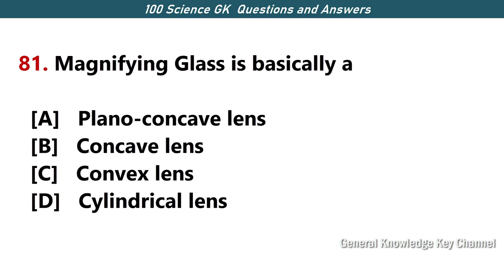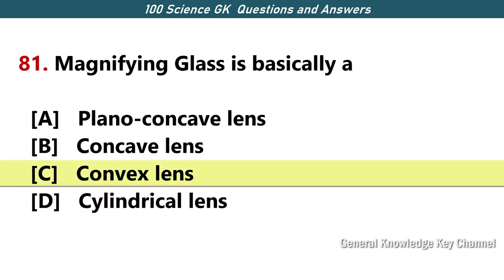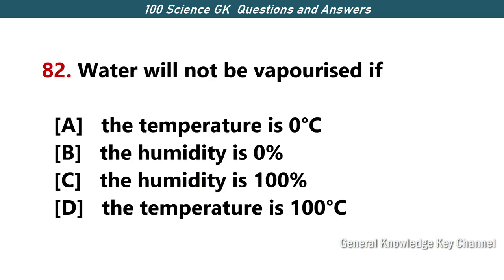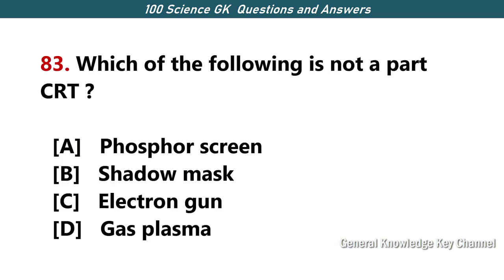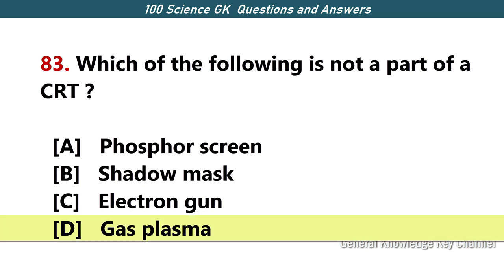A magnifying glass is basically a — Answer — convex lens. Water will not be vaporized if — Answer C — the humidity is 100%. Which of the following is not a part of a CRT? Answer D — gas plasma.